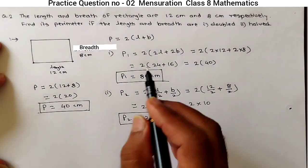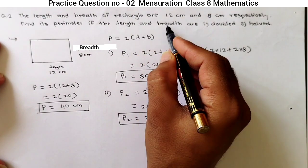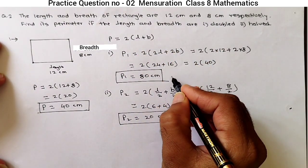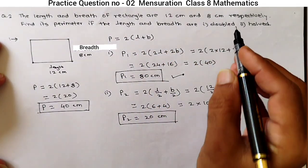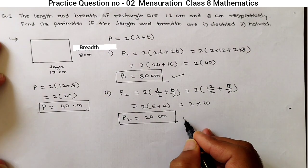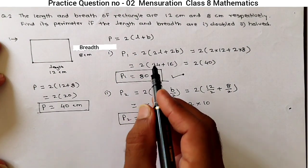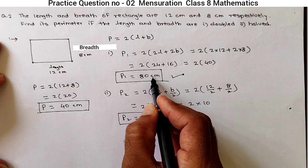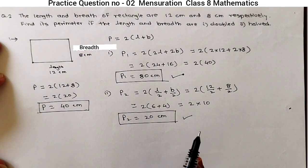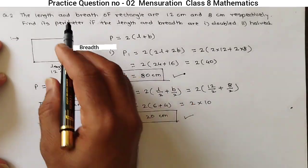But what is asked? Perimeter when length and breadth are double, this will be our first answer. And second is half. Just notice, in original condition, perimeter is 40 cm. When double, it becomes double, and when half, it becomes half. So, this is the simple word problem for mensuration.